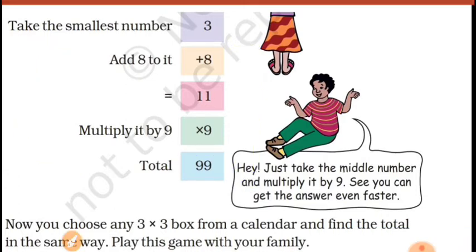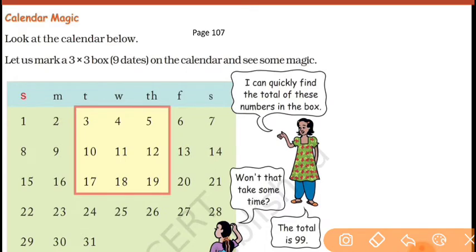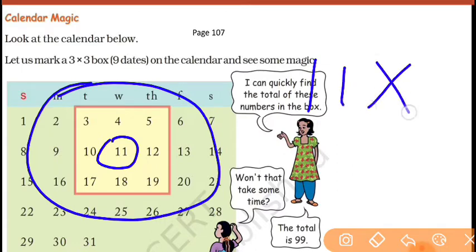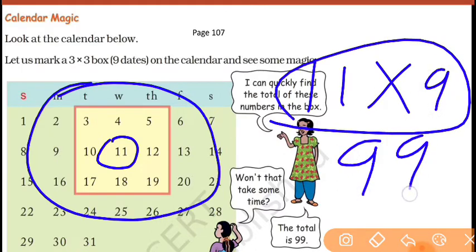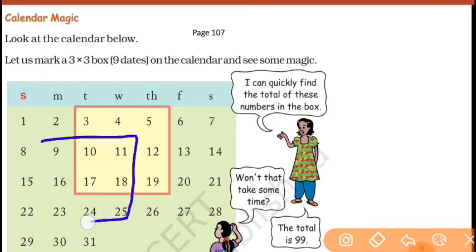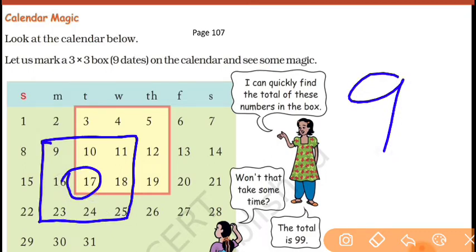But there is an even better magic — aapko kuch nahi karna hai! Jo box ke andar 9 numbers aa rahe hain, aap bilkul beech wala number le lo — center mein kaun sa number hai? 11. Aap simply 11 ko 9 se multiply kar do — 99 ho gaya! Aapko add bhi nahi karna hai. You'll get the answer directly. And this is true for any box — koi bhi 9-number box lo, center number ko 9 se multiply karo — answer wahi hoga.